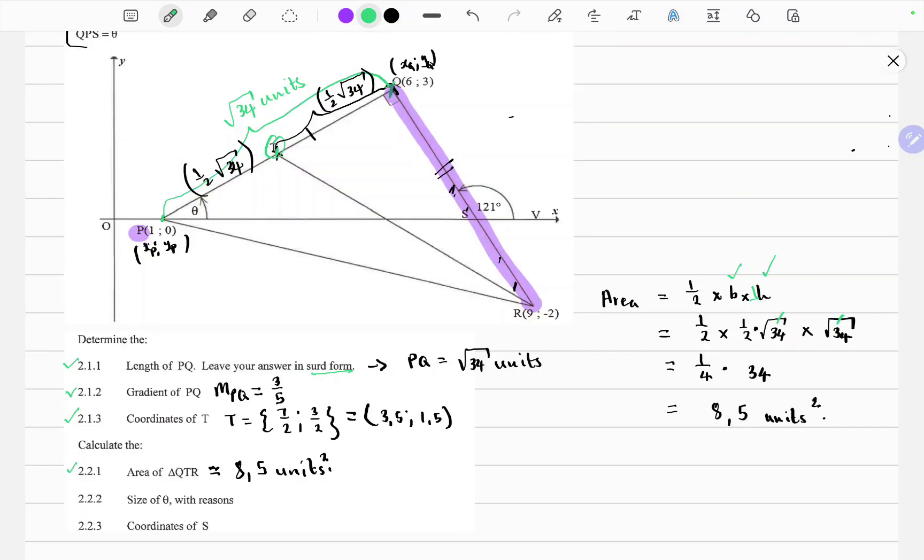So the next question wants us to calculate the size of theta and provide reasons. So let's identify where the angle theta is. I'm going to use green. This here is angle theta. We want the size of that angle. So by inspection, we're given an exterior angle. If you can analyze the schematic, you will notice that...